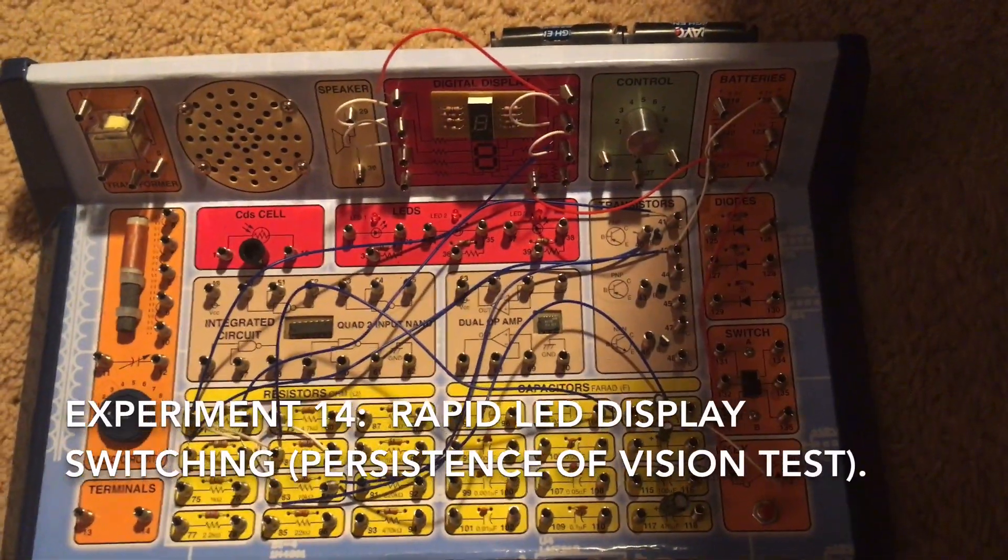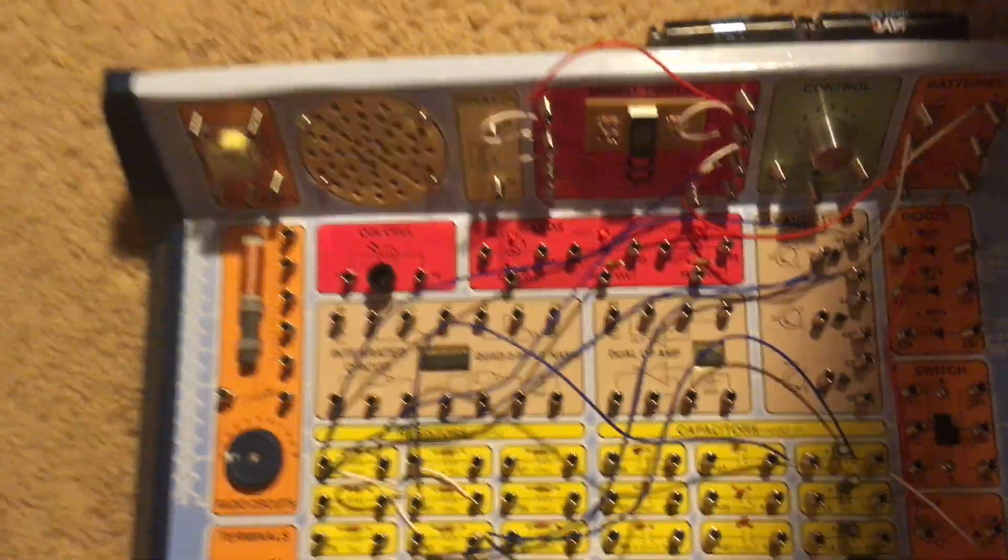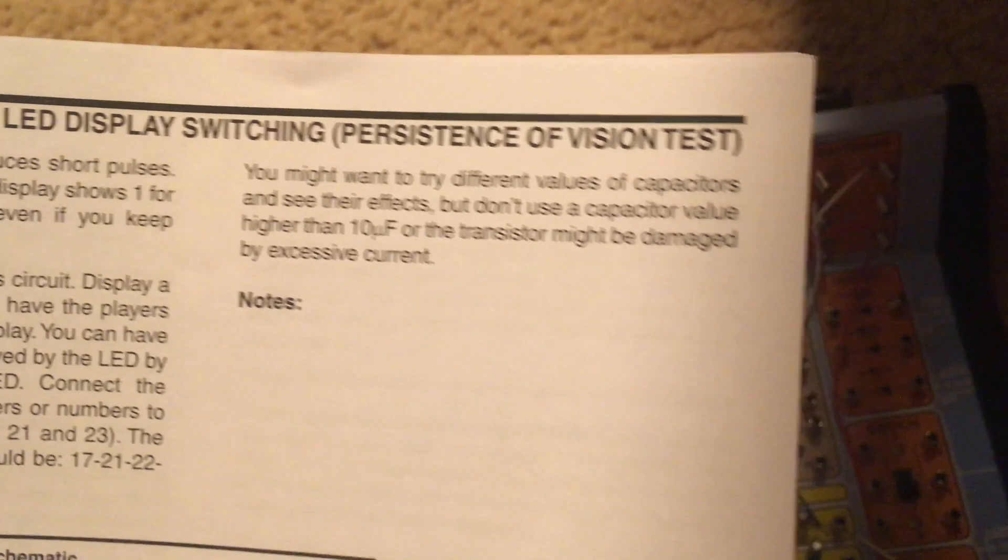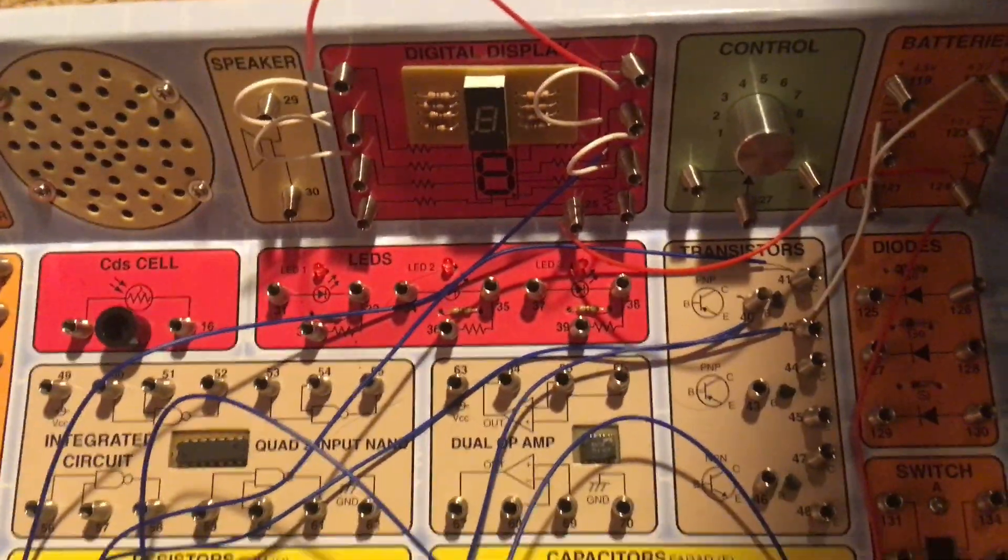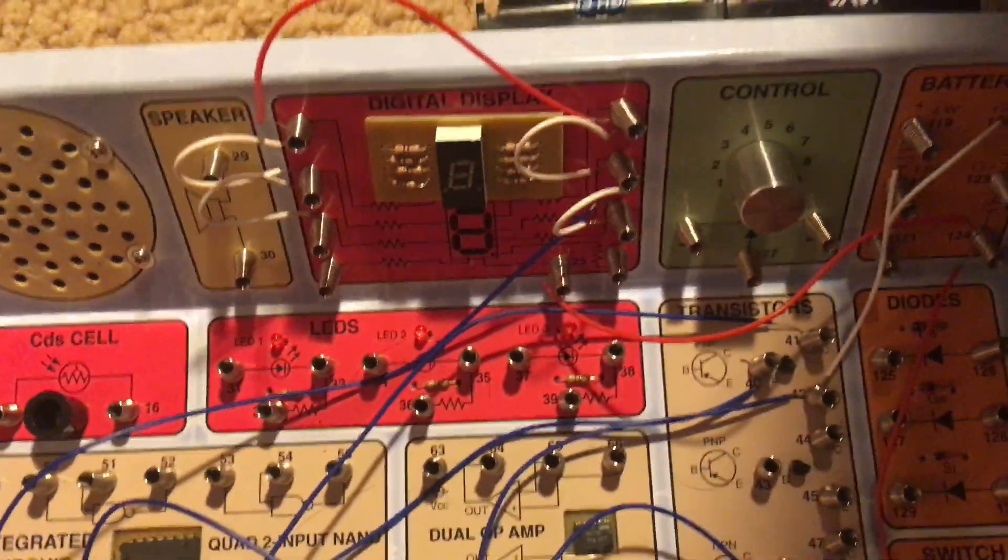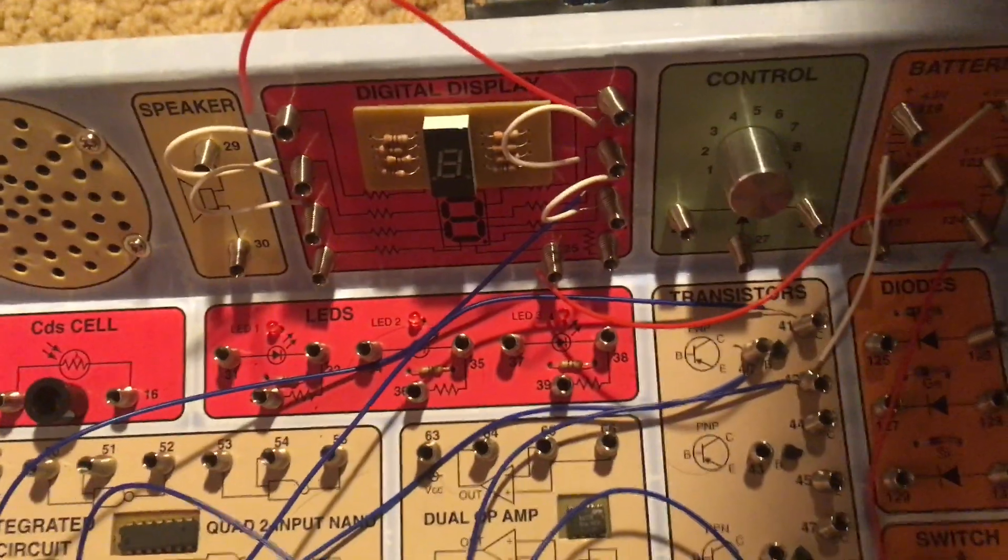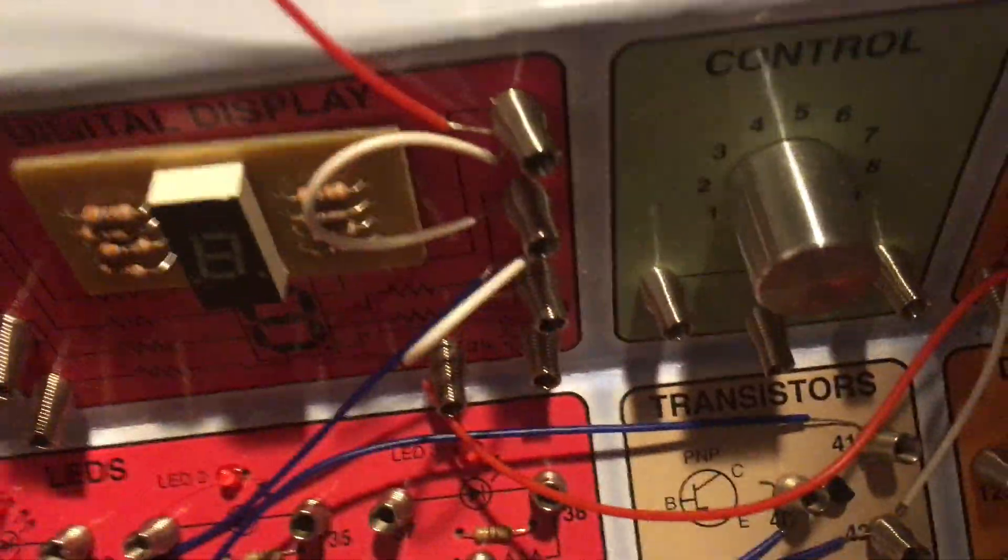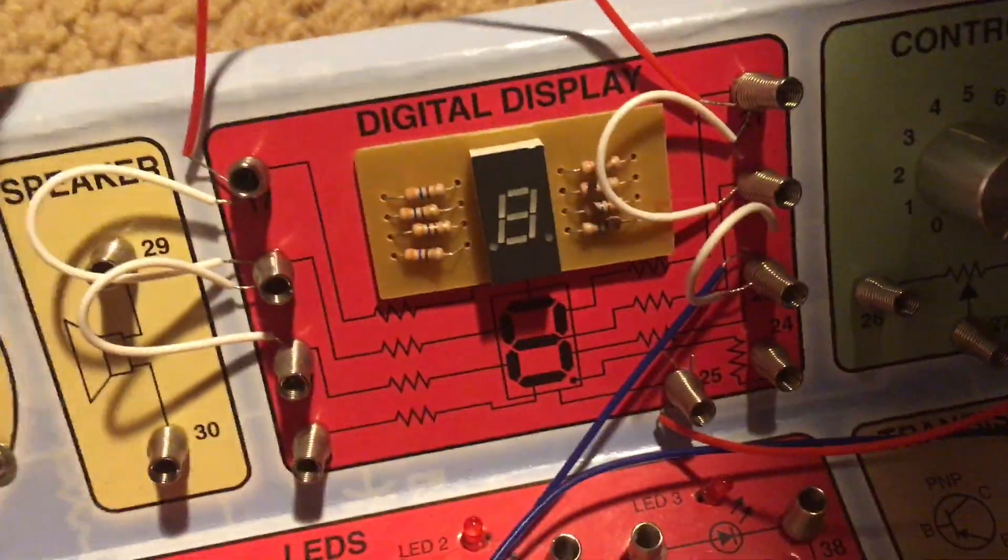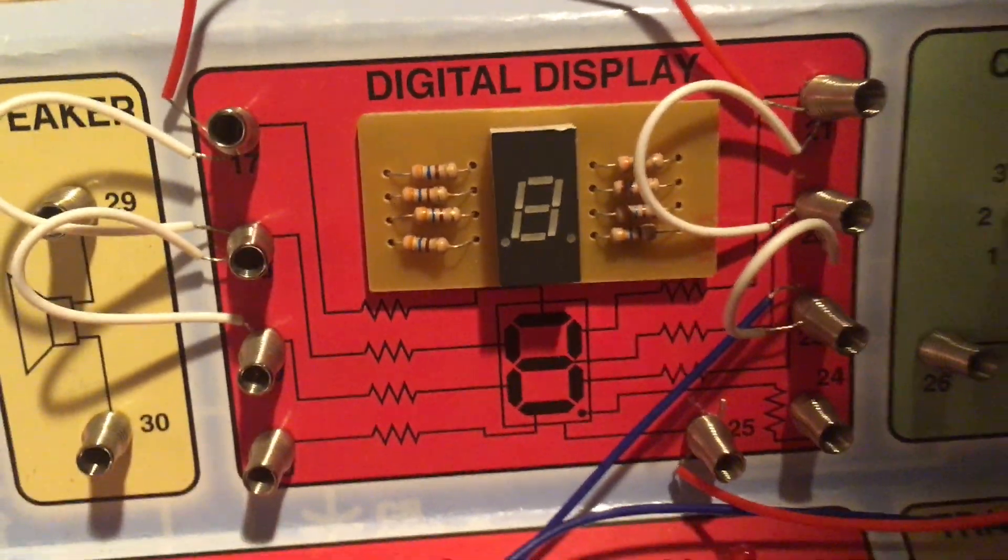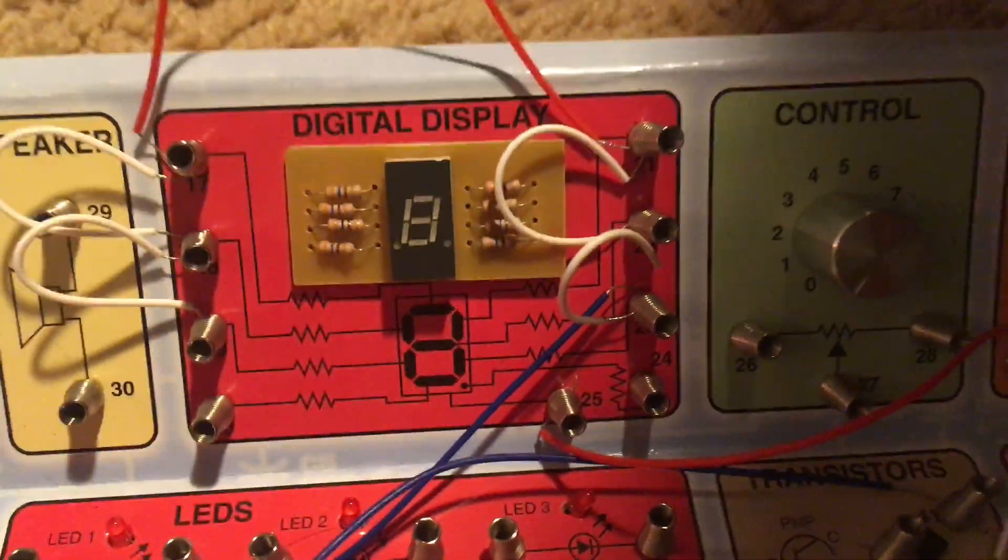Experiment 14 is rapid LED display switching, also known as persistence of vision test. When I push the key switch, the seven segment LED display will flash, revealing a letter or number depending on how you wire the display. You just connect small jumper wires between the terminals around the digital display to illuminate different sections of it.